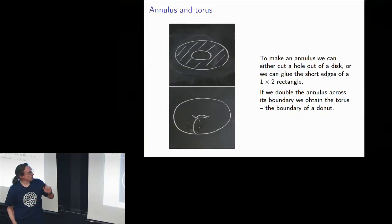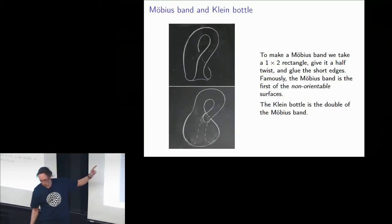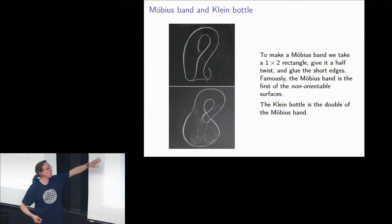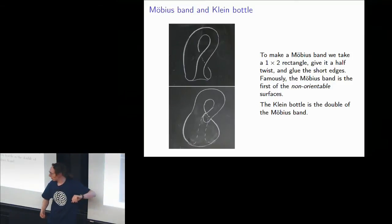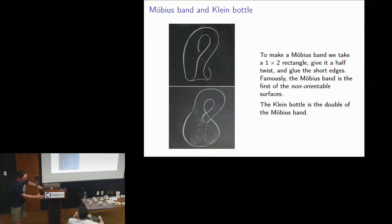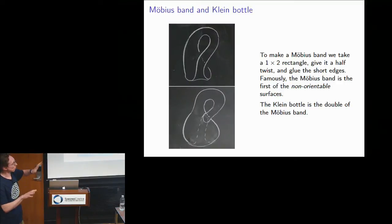The next surfaces are the Möbius band and the Klein bottle. A Möbius band is what you get if you take a strip of paper, give it a half twist, and glue the short ends. If you double the Möbius band you get the Klein bottle. An even number of half twists gives you an annulus; an odd number gives you a Möbius band. Something very cool: the boundary changes depending on how many half twists you give it.